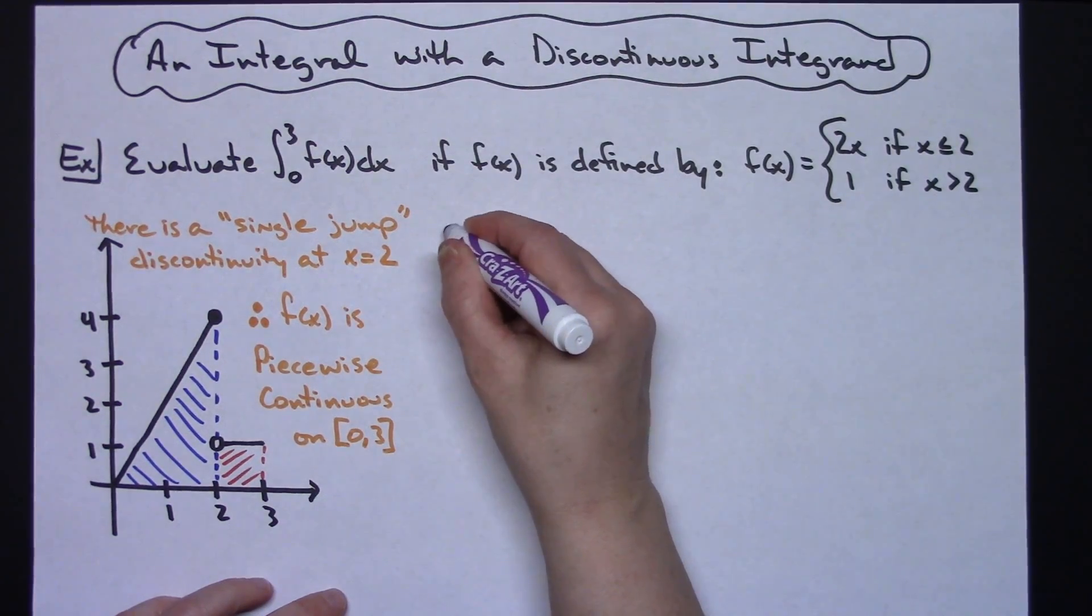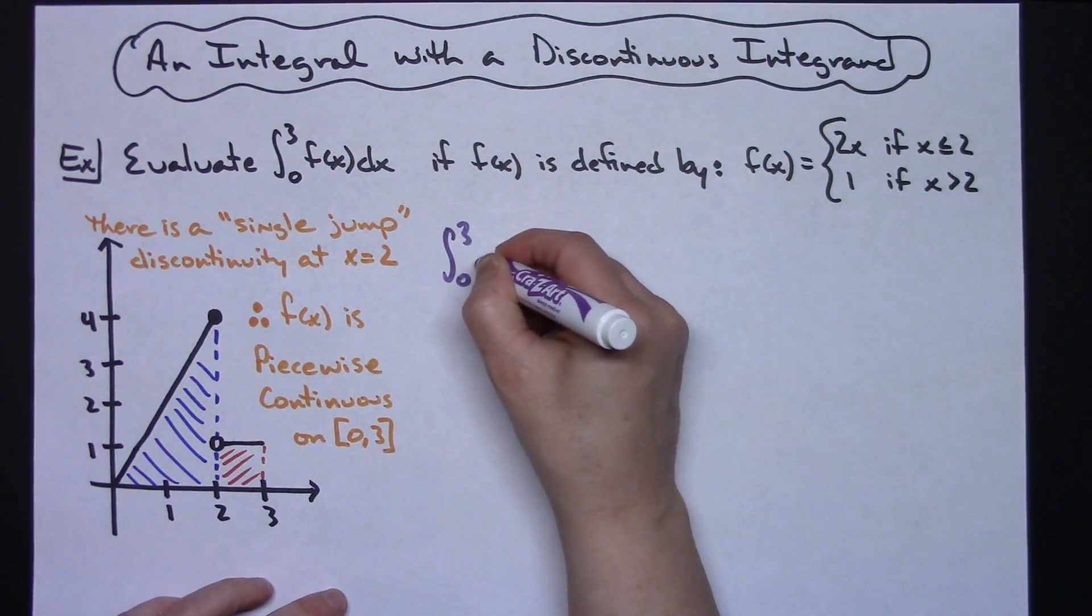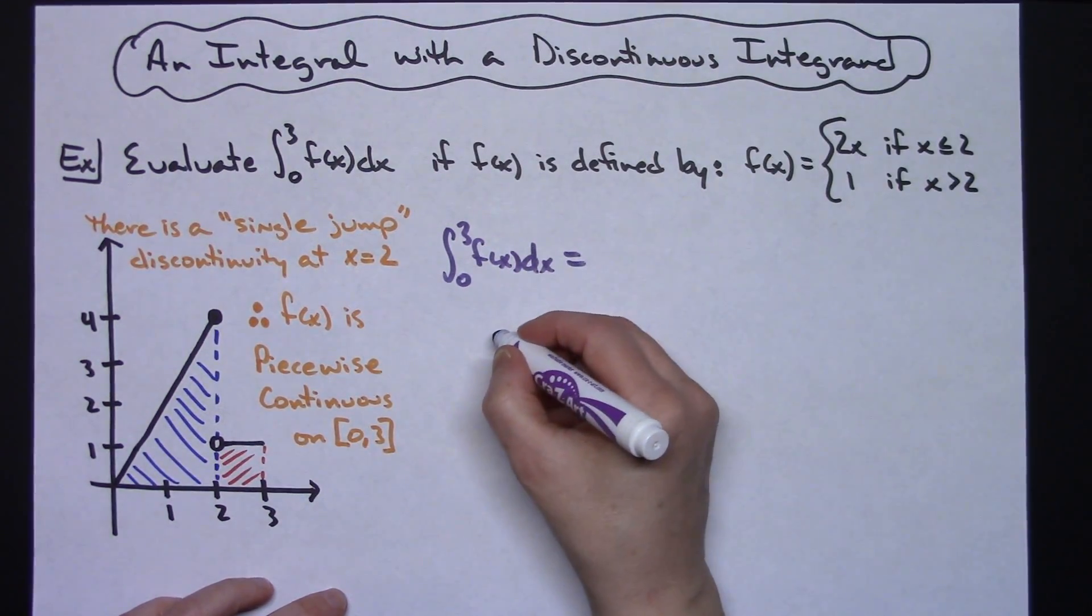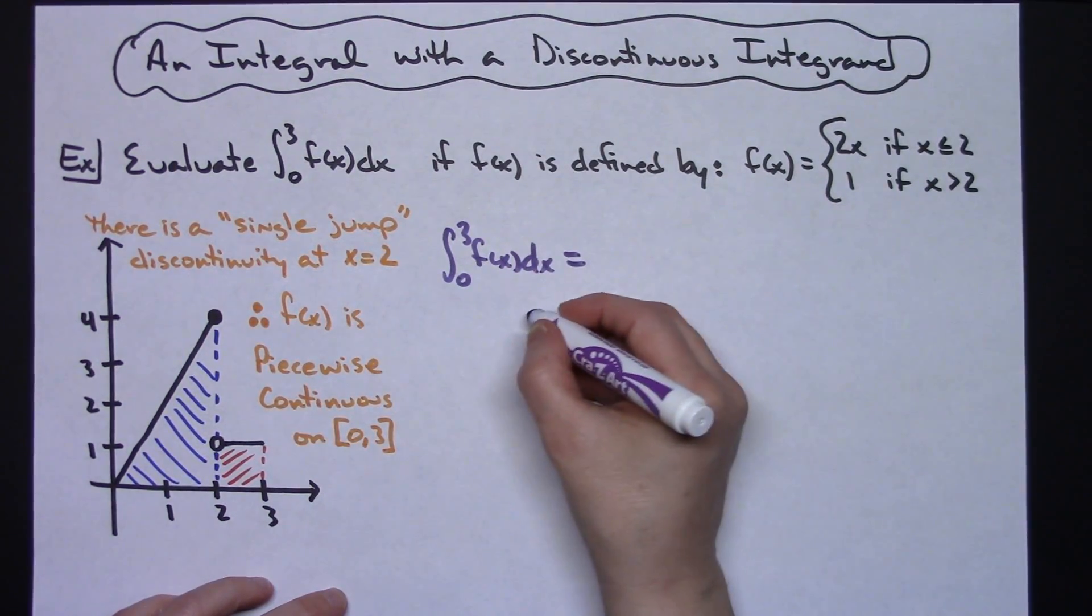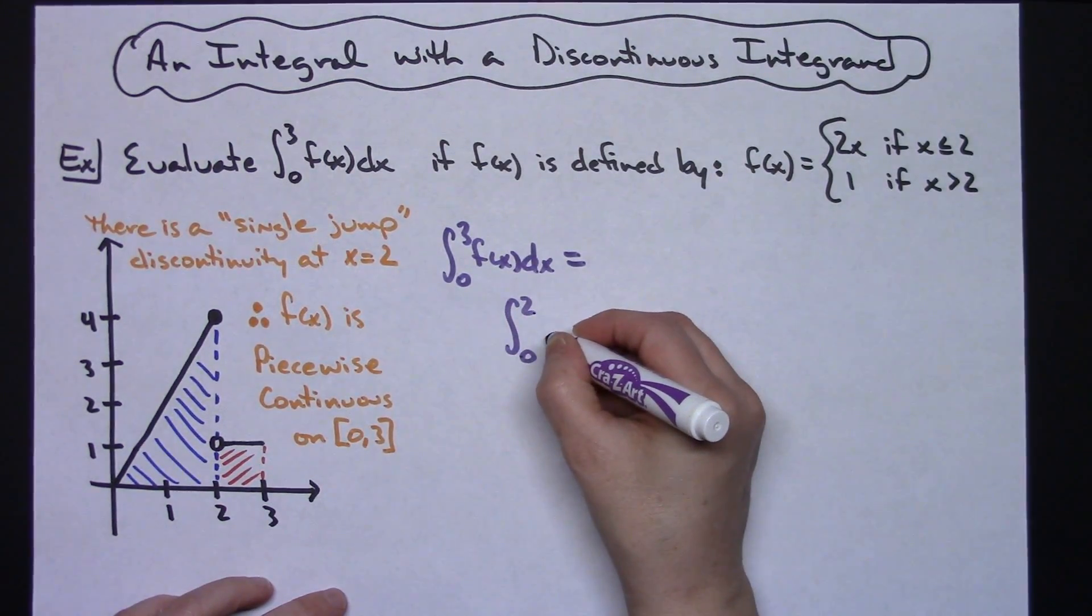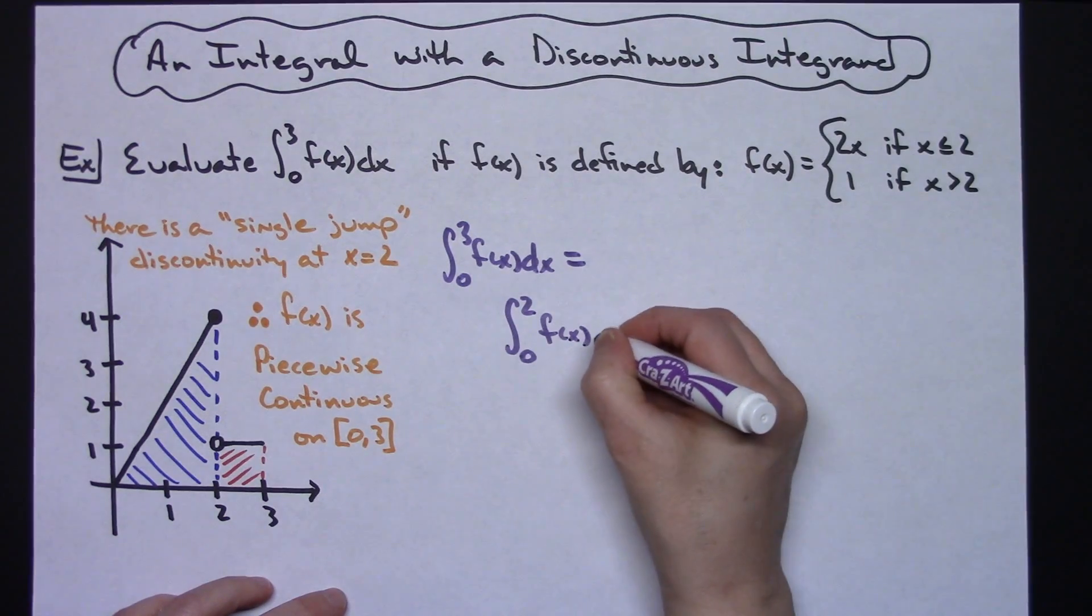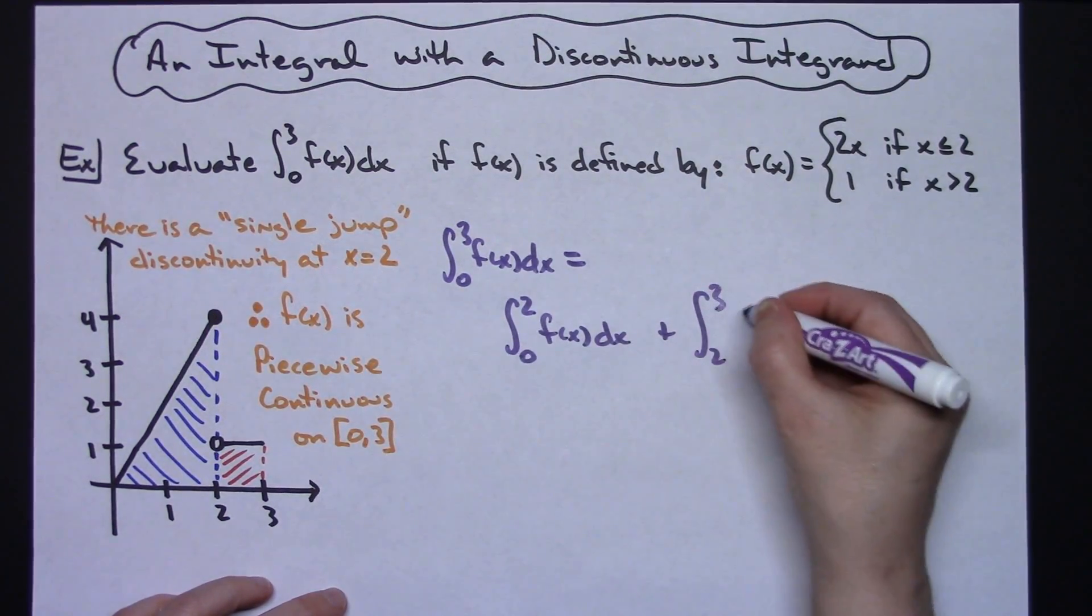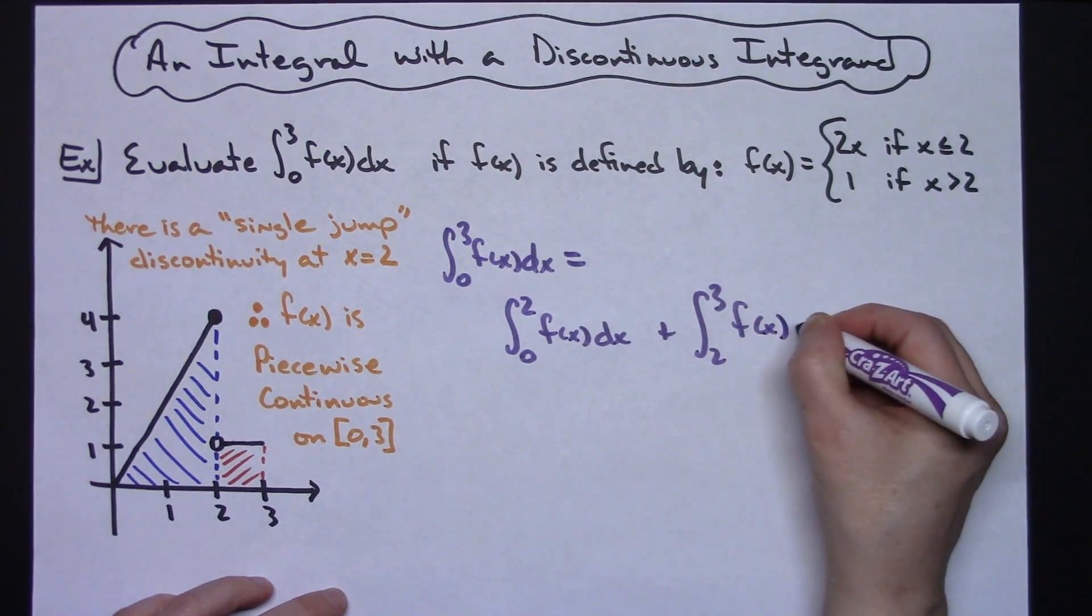All right, so the integral from 0 to 3 of f of x dx is going to be equal to, I'm going to come down here so I have enough room, the integral from 0 to 2 of f of x dx plus the integral from 2 to 3 of f of x dx.